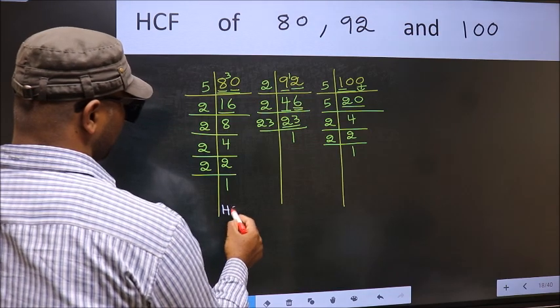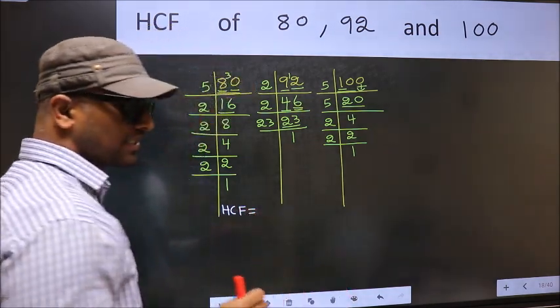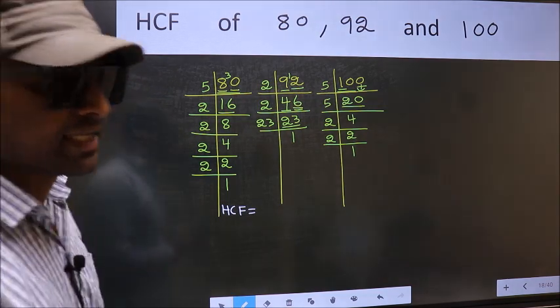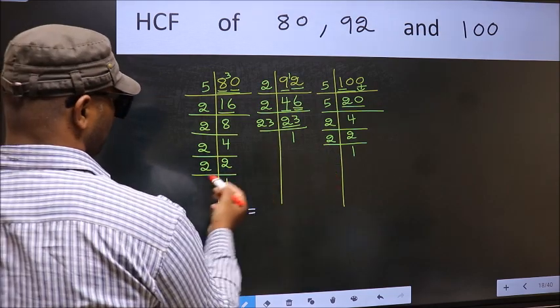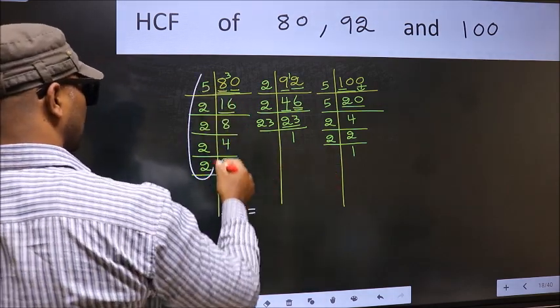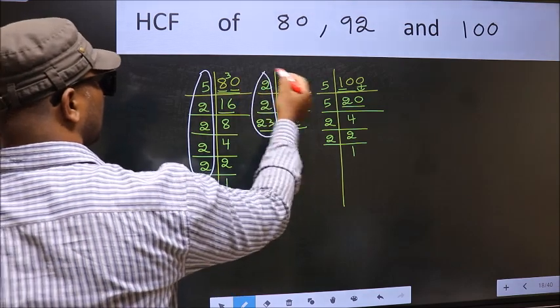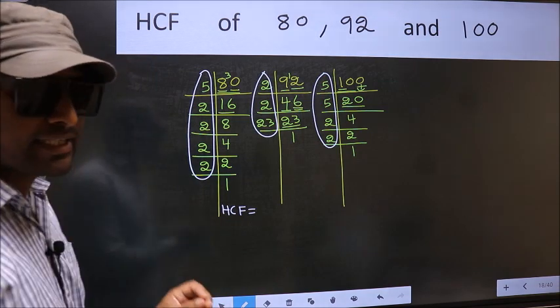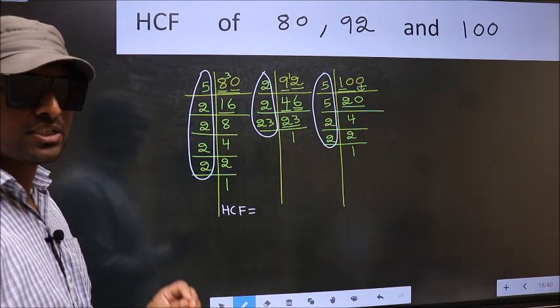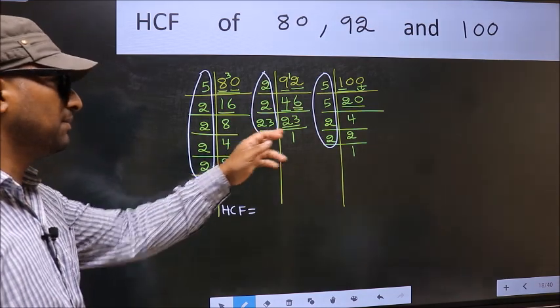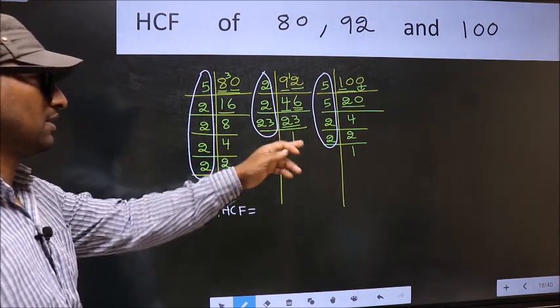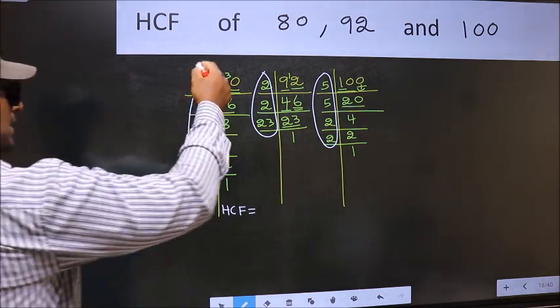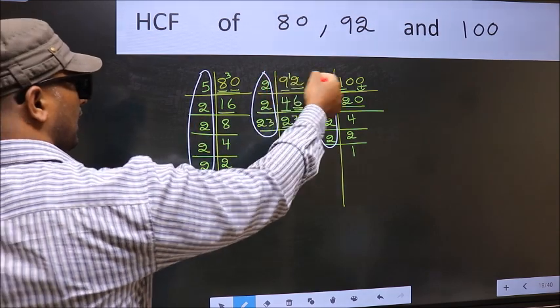Therefore our HCF is, HCF is the product of numbers which should be present in these 3 places. So now let us find the numbers which should be present here, here and also here.